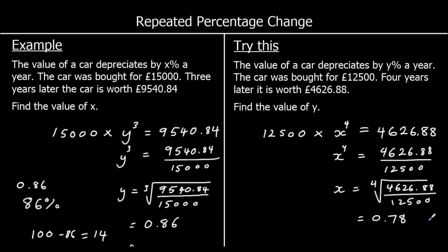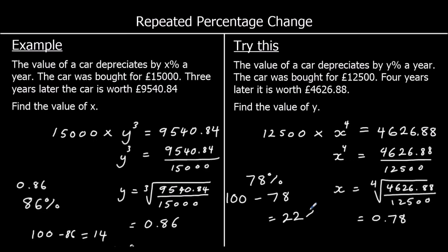What percentage decrease is that? 0.78 as a percentage is 78%. And 100% take away 78% is 22%. So our percentage decrease is 22%.